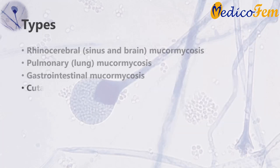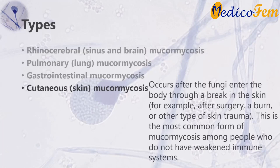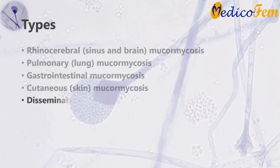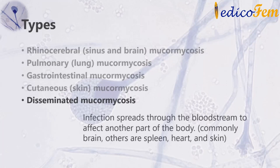Cutaneous or skin mucormycosis occurs after the fungi enter the body through a break in the skin, for example after surgery, a burn, or other type of skin trauma. This is the most common form of mucormycosis among people who do not have weakened immune systems. Disseminated mucormycosis occurs when the infection spreads through the bloodstream to affect another part of the body.